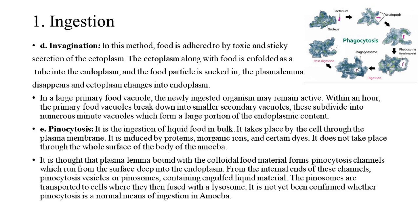E. Pinocytosis: It is the ingestion of liquid food in bulk. It takes place by the cell through the plasma membrane, and is induced by proteins, inorganic ions, and certain dyes. It does not take place through the whole surface of the body. Plasmalemma bound with colloidal food material forms pinocytosis channels running from the surface deep into the endoplasm. From the internal ends of these channels, pinocytosis vesicles (or pinosomes) containing engulfed liquid material are formed. The pinosomes are transported to cells, where they fuse with a lysosome. It has not yet been confirmed whether pinocytosis is a normal means of ingestion in amoeba.